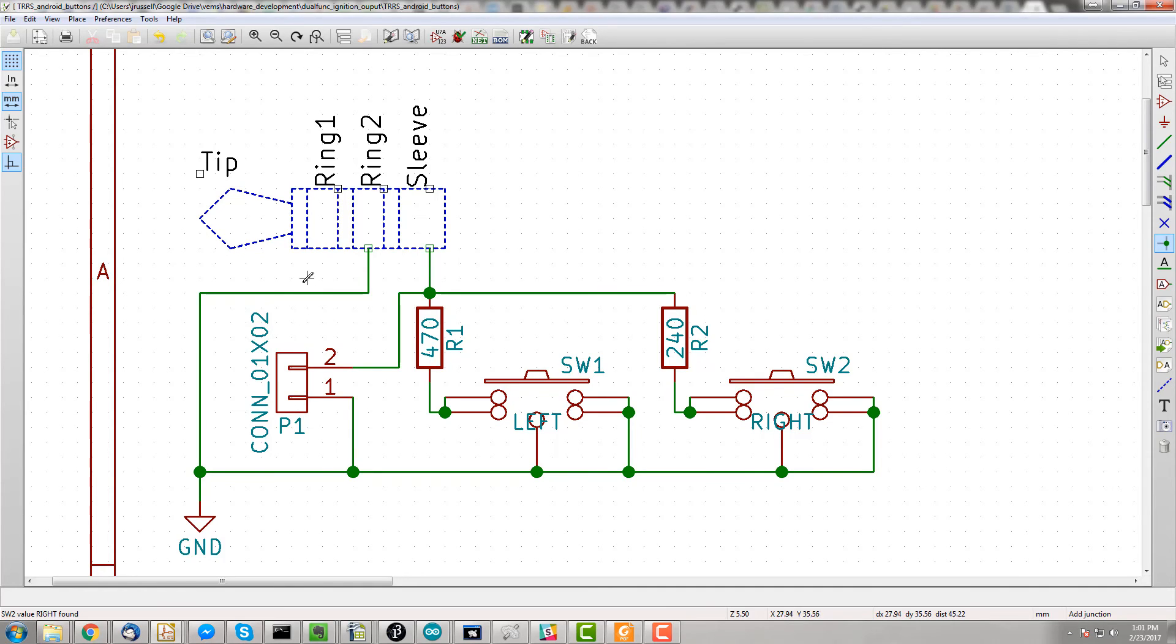So we've got the ring two and the sleeve, the sleeve going to the resistors, through the switches, back to ring two, which is the ground. So we'll switch over to the board layout and show you how we changed that.